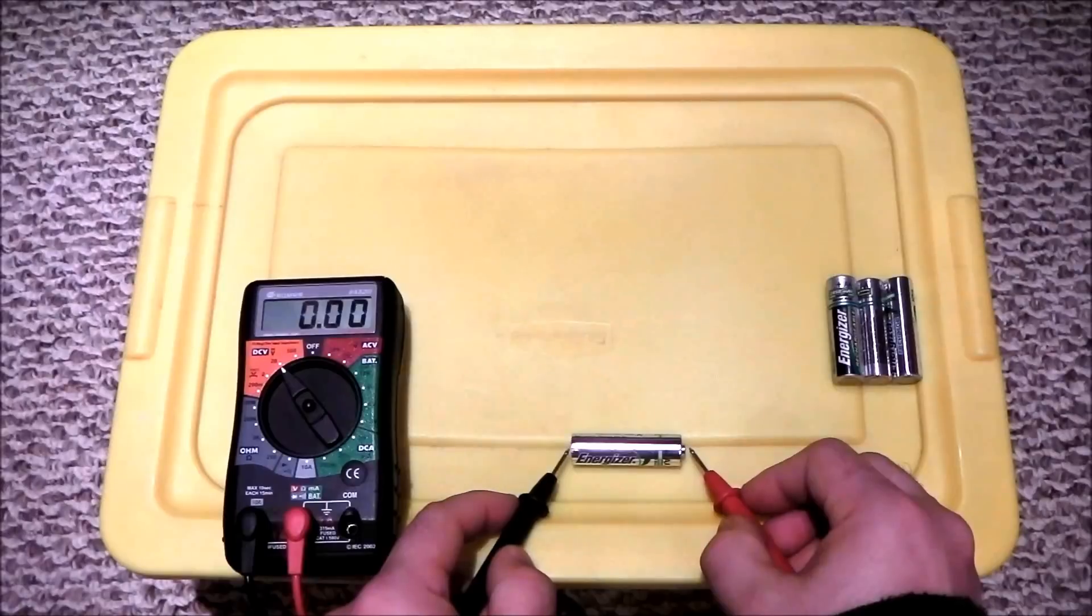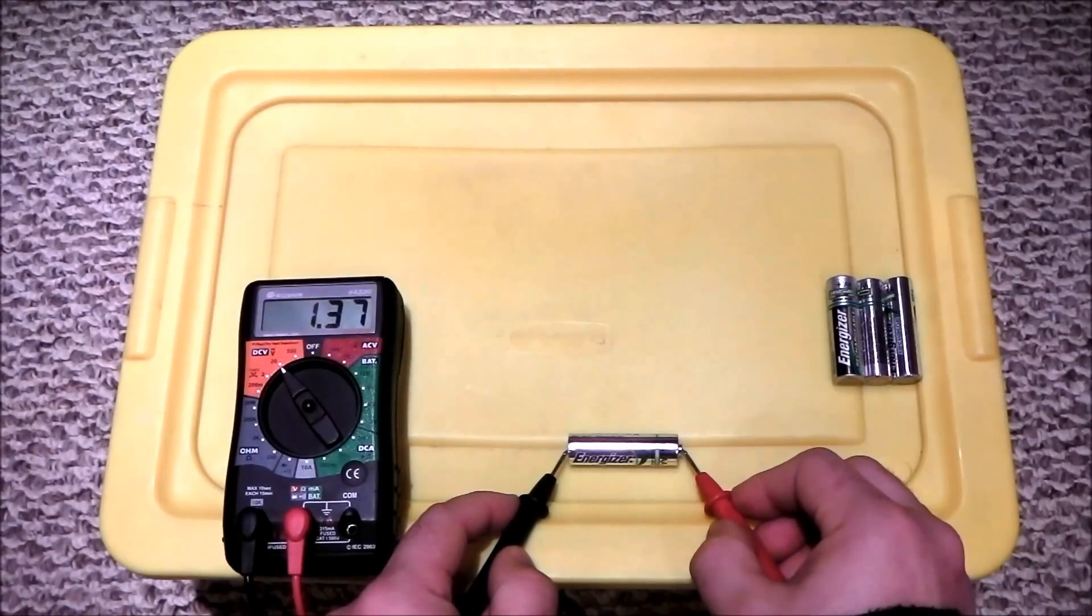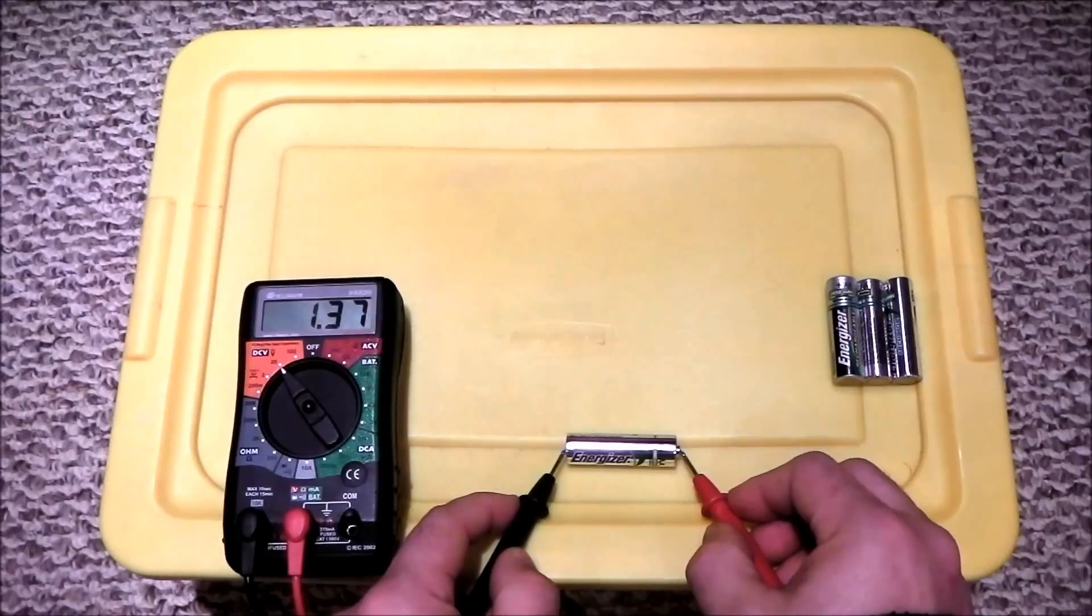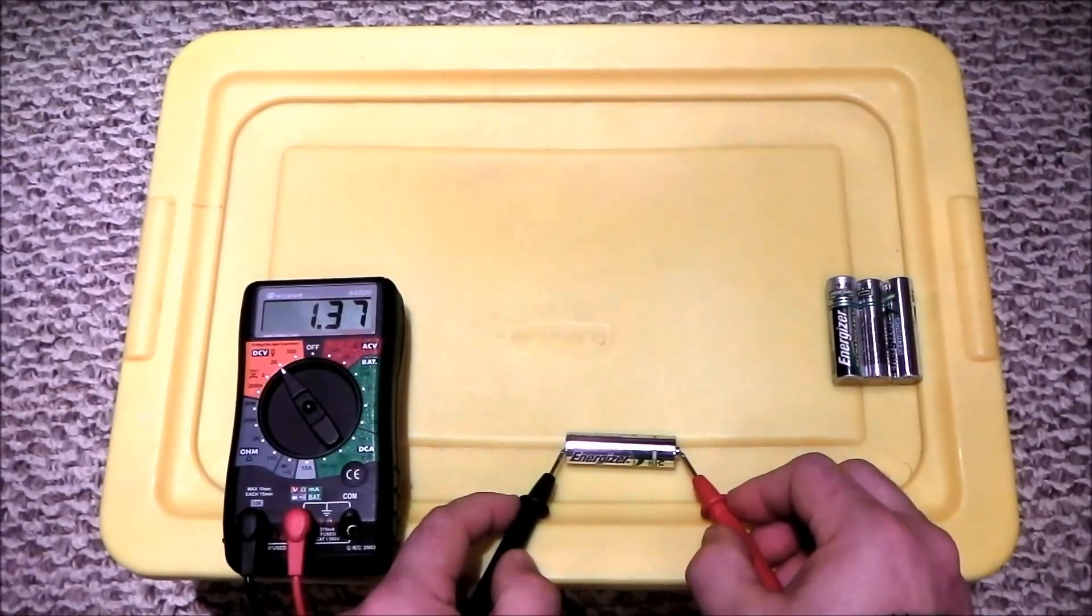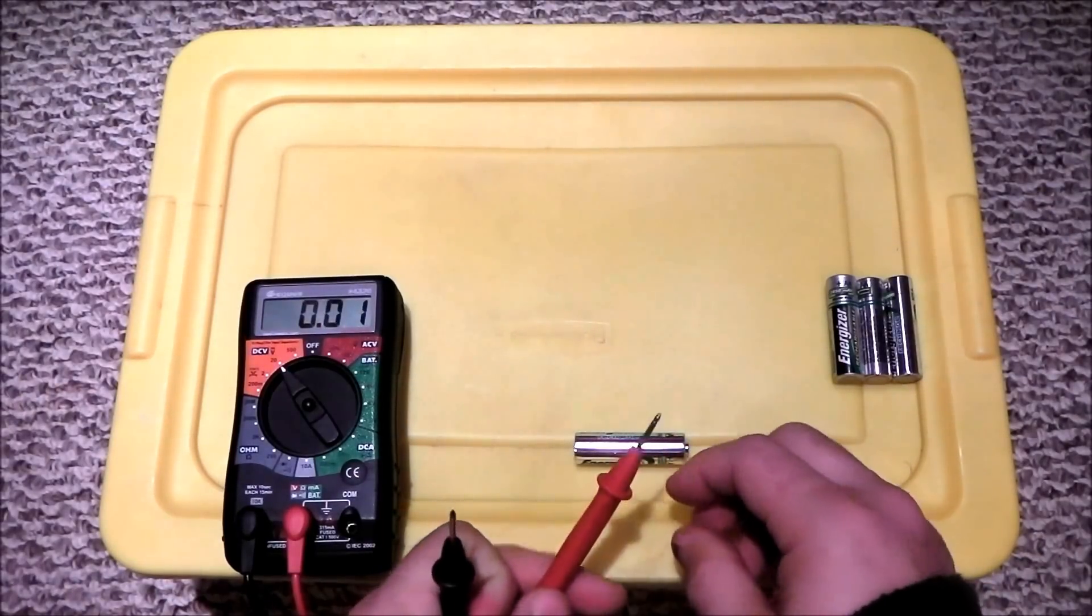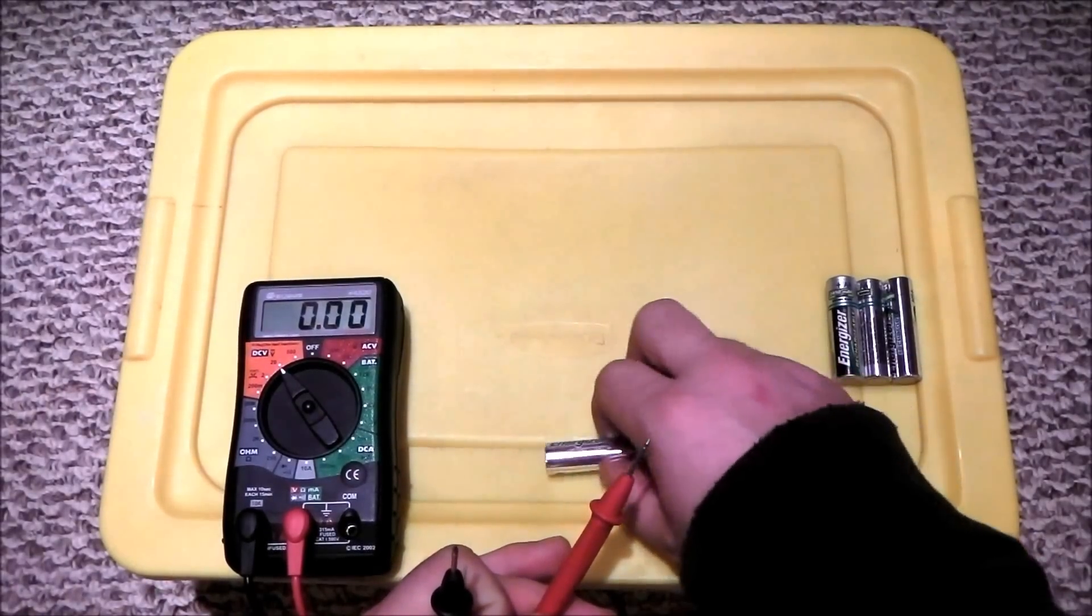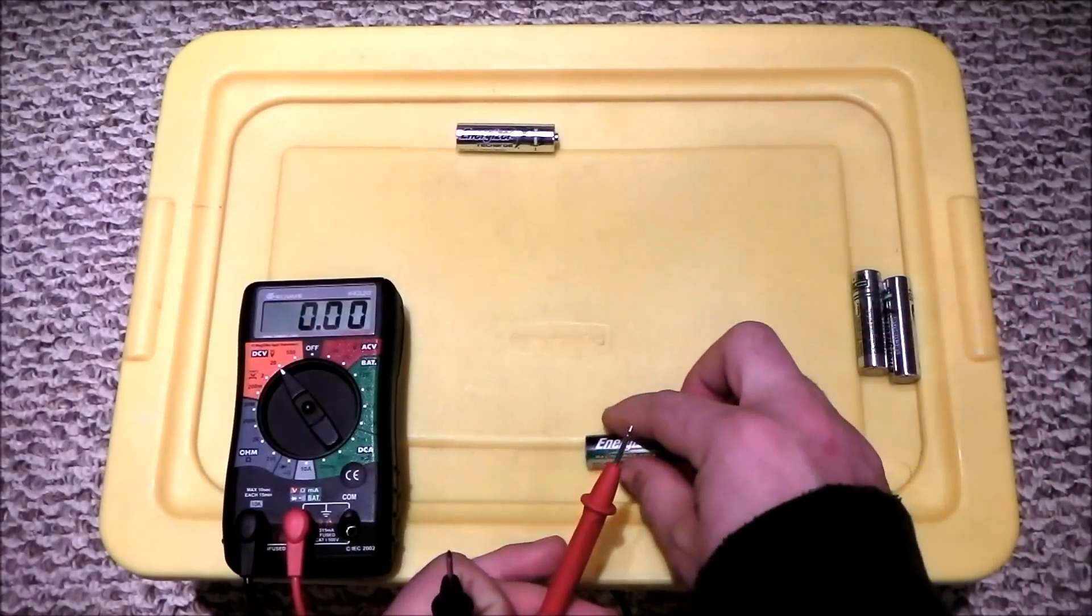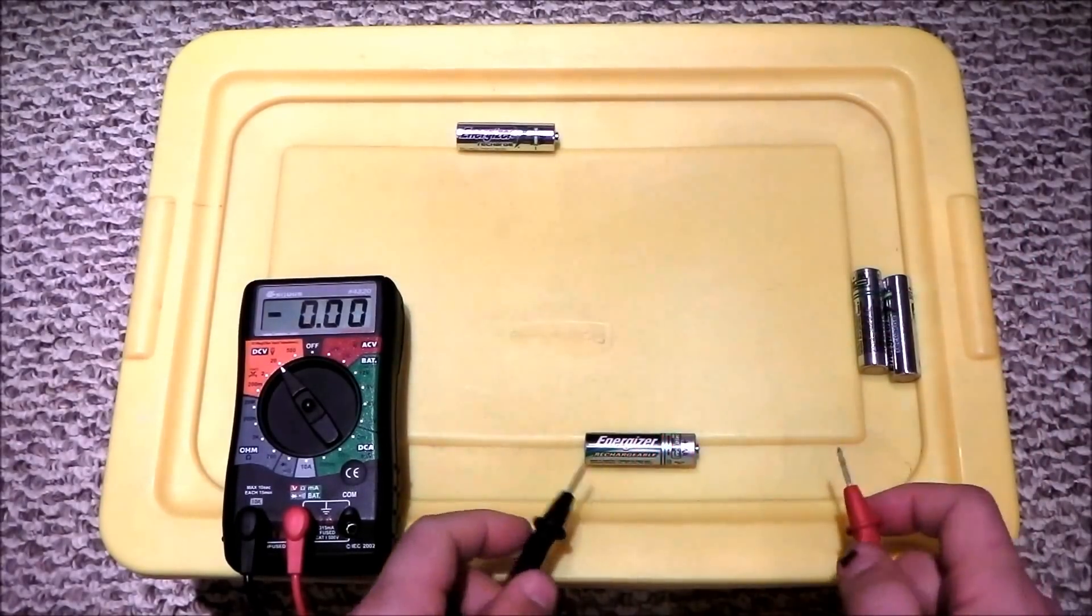So on a standard double-A battery, rechargeable or non-rechargeable, you're going to be looking for a reading of at least 1.25 volts. This one's reading 1.37, so anything higher than 1.25 is going to be good for anything that requires a decent amount of power, like remote control cars or handheld video game systems, anything like that.